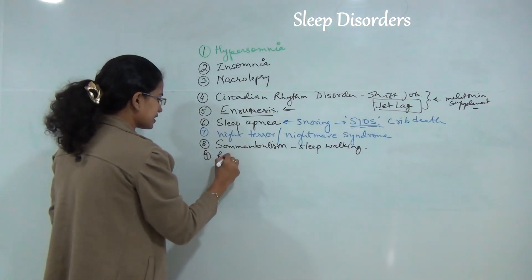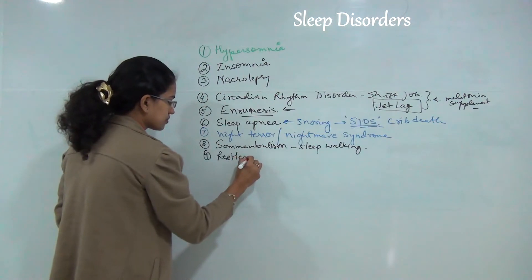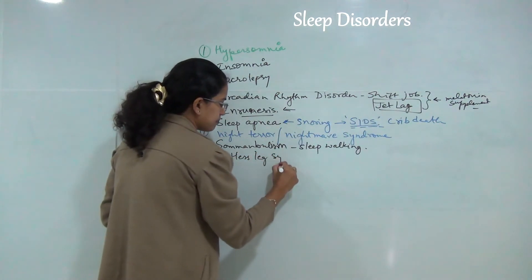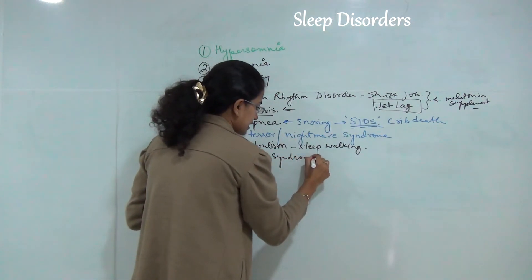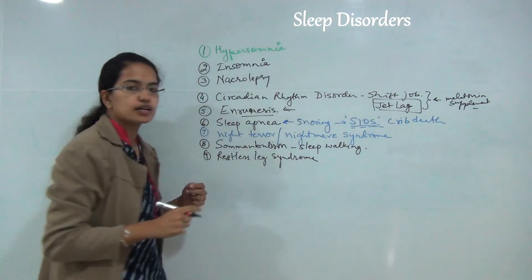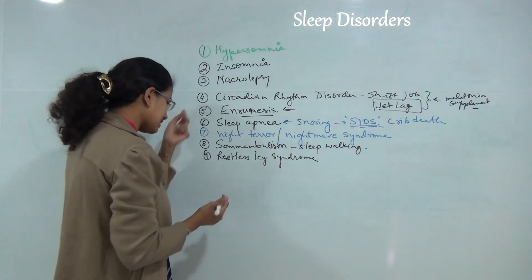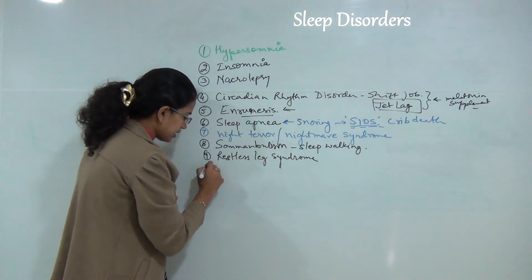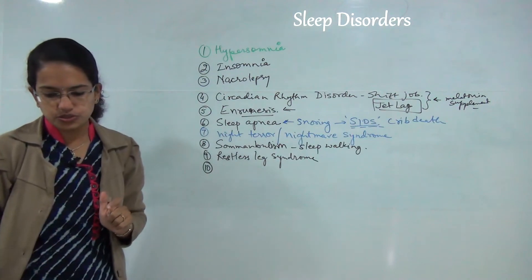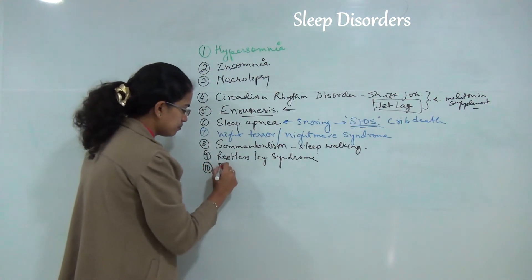Next is restless leg syndrome. A person while sleeping feels that he has to do a lot of work and feels that his legs are constantly moving. The next is also known as periodic limb movement disorder.